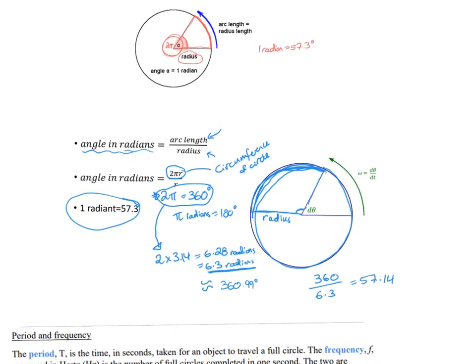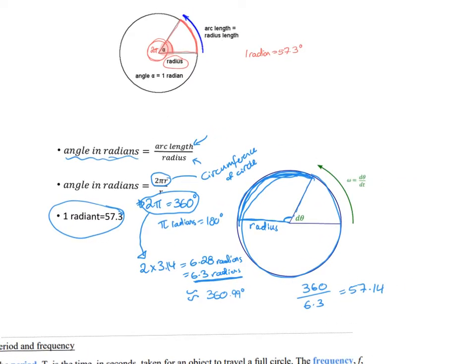To convert from degrees to radians, multiply your value in degrees by π and divide by 180. For example, to convert 45 degrees into radians: 45 × π / 180 = 0.25π, or π over 4. It's the same thing.